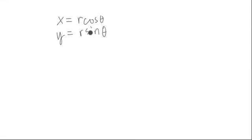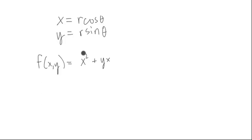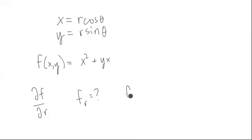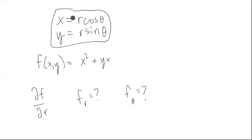Let's suppose that we have a function currently in terms of x and y — maybe something like x squared plus yx. And let's suppose that we want to think about what the derivative of f is with respect to r, or in other words, f_r. Maybe we also want to know what f_theta is — where we're changing coordinates and rewriting x as r cosine theta, r and theta being polar coordinates.